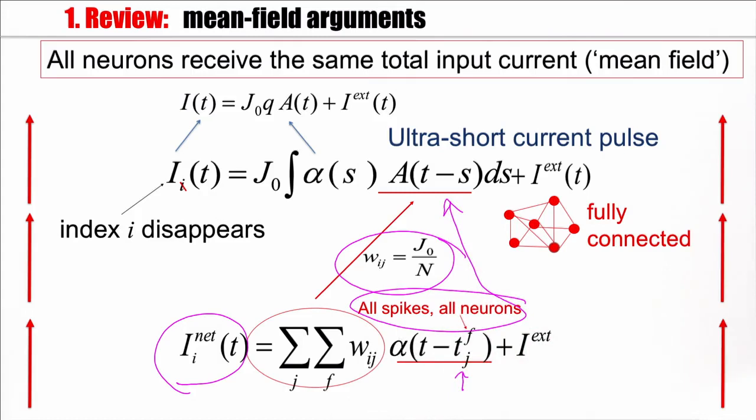If, moreover, we assume that this pulse here is the ultra-short current pulse, so formally with the Dirac delta function, we can just say it's q times the delta of s. Then you integrate this out, the integral disappears, and you see that the current is just the population activity plus, of course, the external current. So each neuron is driven by the population activity, it's driven by the activity of all other neurons. And this is something we are going to exploit today.